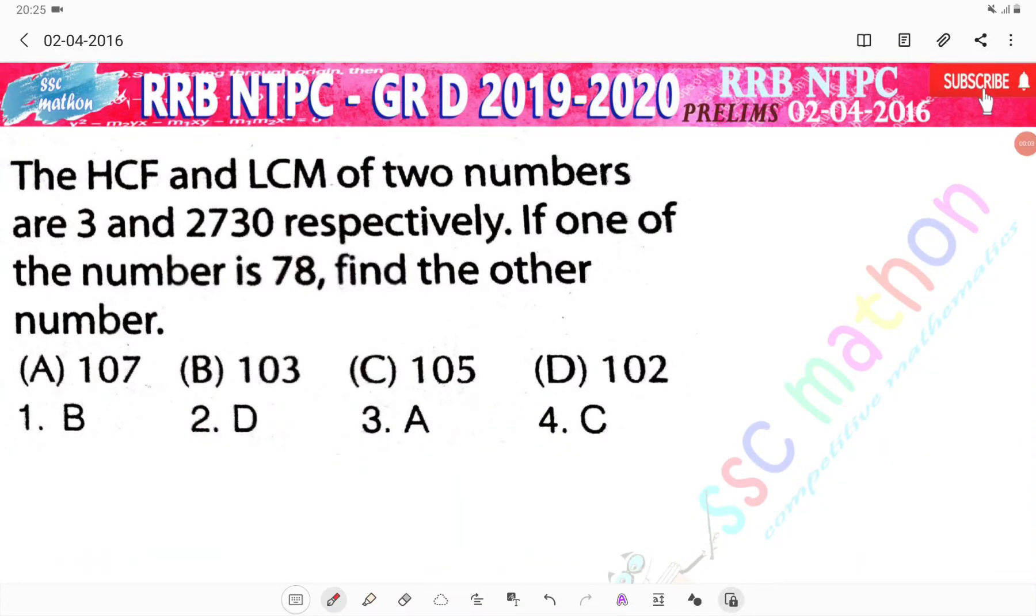Hello everyone, welcome back to SGM of Narabi Indivisible Institute. The HCF and LCM of two numbers are 3 and 2730 respectively. If one of the number is 78, find the other number.